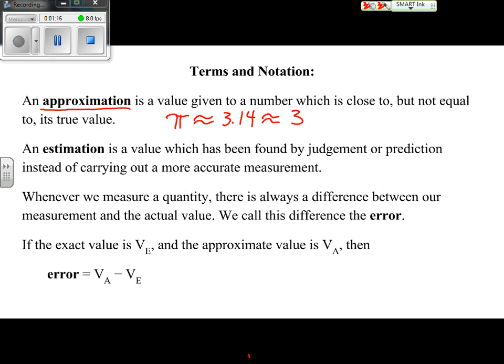Another way we hear approximation used is if I'm approximating the number of students in a class, I might say it's approximately 30 even if it's a little bit higher, 31 or 32, or a little lower, 28 or 29 or something like that.